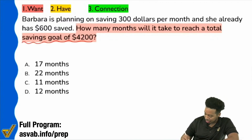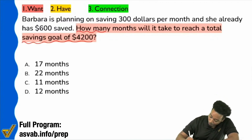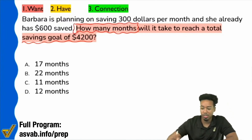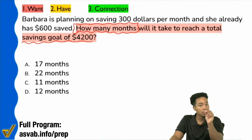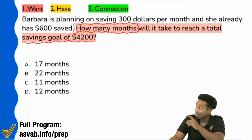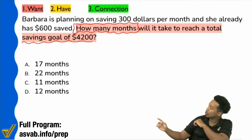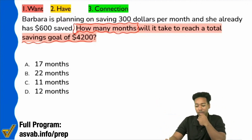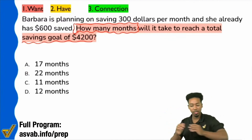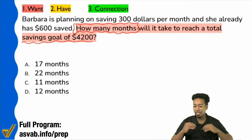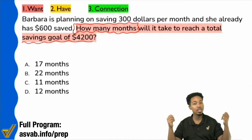Notice over here it's saying we're asking how many months. Do we see that we are looking for time here? Particularly, we're looking for the amount of time it takes to reach that goal. Does that sound familiar? Did I mention anything earlier about saying how many of this to get to this many of that?